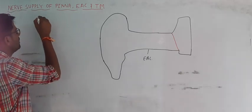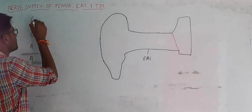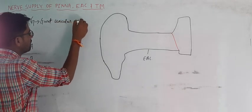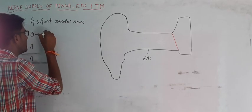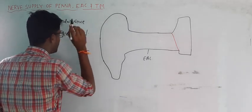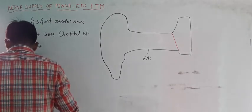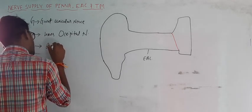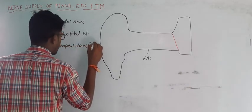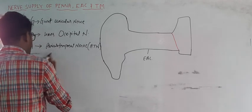To remember the nerve supply, you remember one thing: GOA. G-O-A-A. G means Greater Auricular nerve. O means Occipital — so Lesser Occipital nerve. And A means Auriculotemporal nerve. The last A is Alderman's nerve — also called Arnold's nerve.